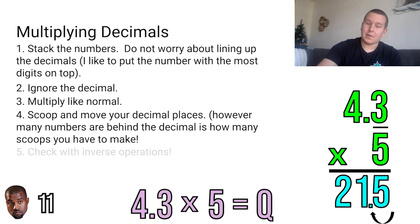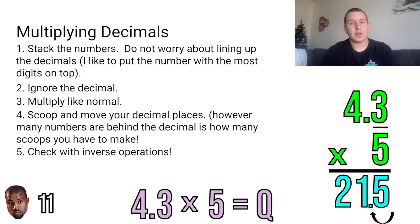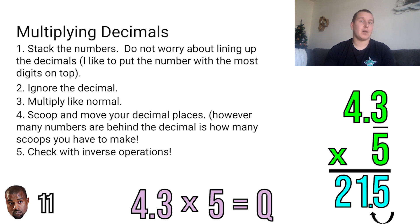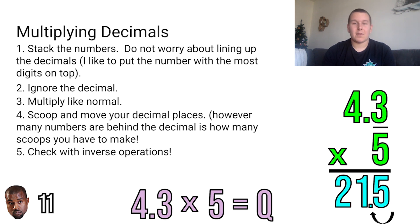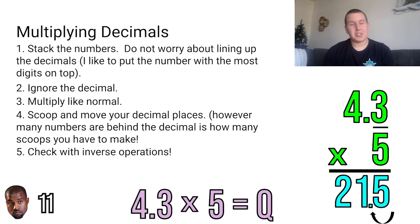And that's about it. The last step would be to check with inverse operations. We haven't quite learned how to divide with decimals yet, and it gets a little tricky, but Mr. E is all about checking your answer. I can guarantee that 21 and 5 tenths is a good answer. So multiplying with decimals is a lot like the standard algorithm — we're just going to add that little scoop element at the end. Let's go ahead and practice a few problems together.